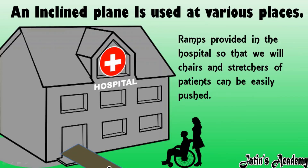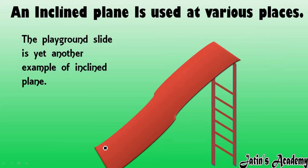In front of hospitals, ramps are provided so that wheelchairs or stretchers can easily move into the hospital by applying less force. Another example is the playground slide — your favorite example! The playground slide is also an example of an inclined plane, where even by applying less force you come down with greater speed.